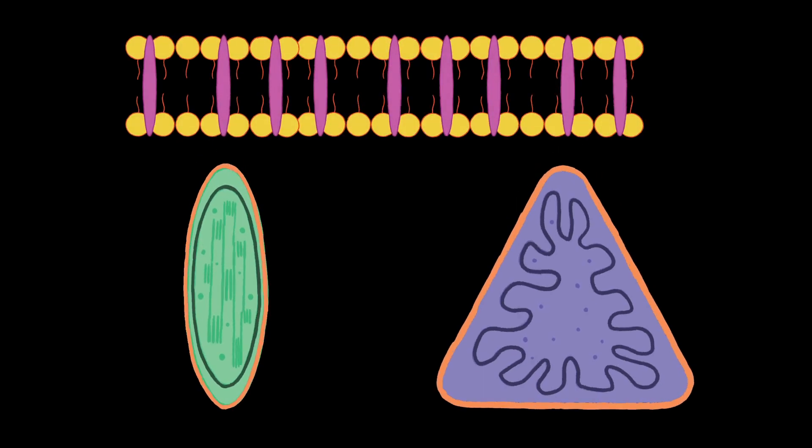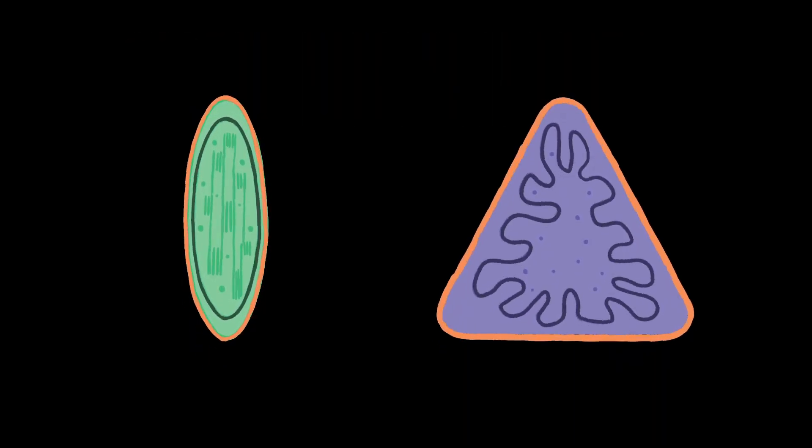Lastly, think about the membranes involved in the engulfing process. Chloroplasts and mitochondria both have two membranes surrounding them, an inner and outer membrane. Their inner membrane contains some particular lipids and proteins that are not present in the outer membrane. Why is that significant?